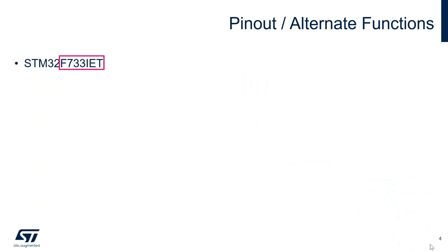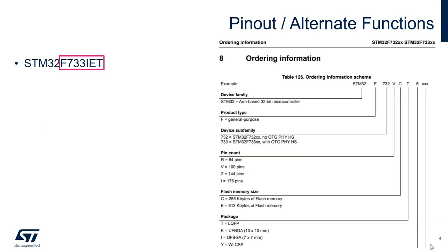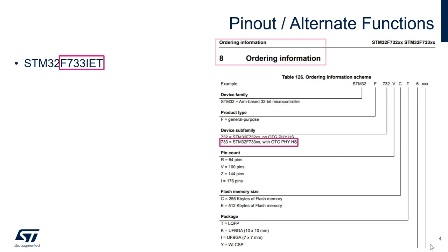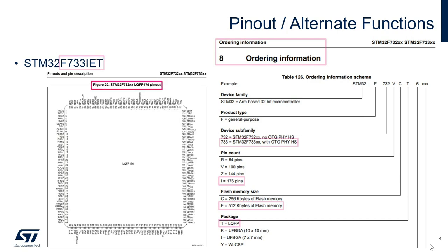The first step is to note down the letter and number of your selected STM32. Using the specified STM32's datasheet, refer to the ordering information section to further dissect device information. In today's presentation, we will use the STM32F733IET as an example. From the ordering information section, we can see that 733 pertains to the device's subfamily, I pertains to the pin count, E pertains to the flash memory size, and T pertains to the package type. Using this package information, we can further locate the pinout diagram of the selected STM32 in the datasheet.